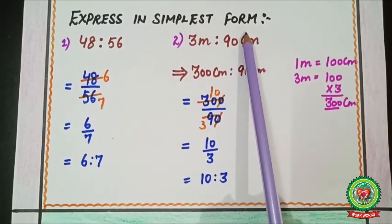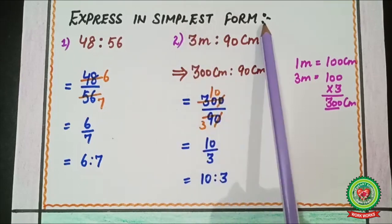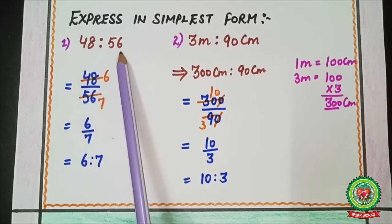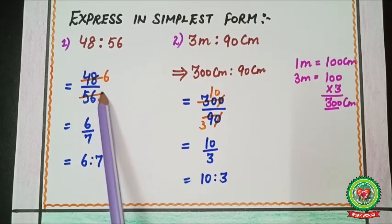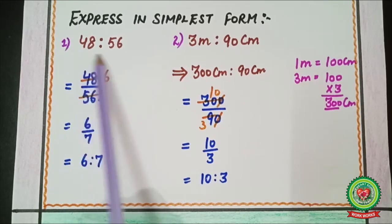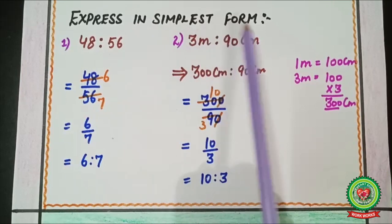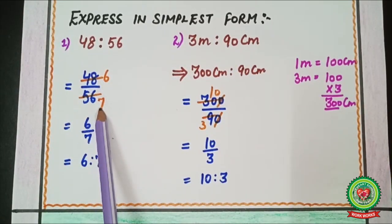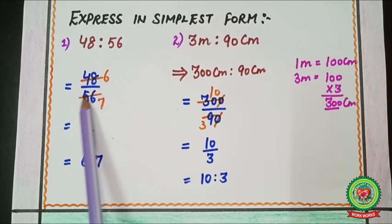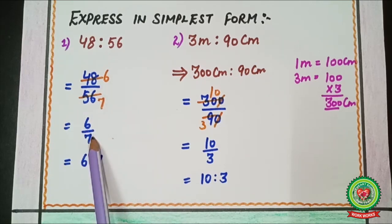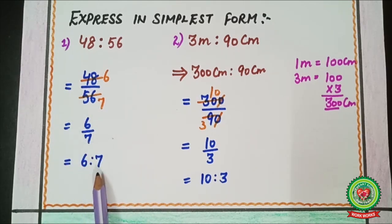First example: express in simplest form. Simplest form means cutting. We take 48 ratio 56 and write it as a fraction. We cut on the 8 table: eight sixes are 48 and eight sevens are 56. Six and seven can't be cut further, so we write 6 upon 7, and in ratio form: 6 ratio 7.